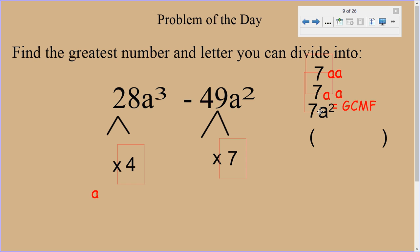So that would be my GCMF, or GCF. So now that I have my GCF, which was 7 A squared.